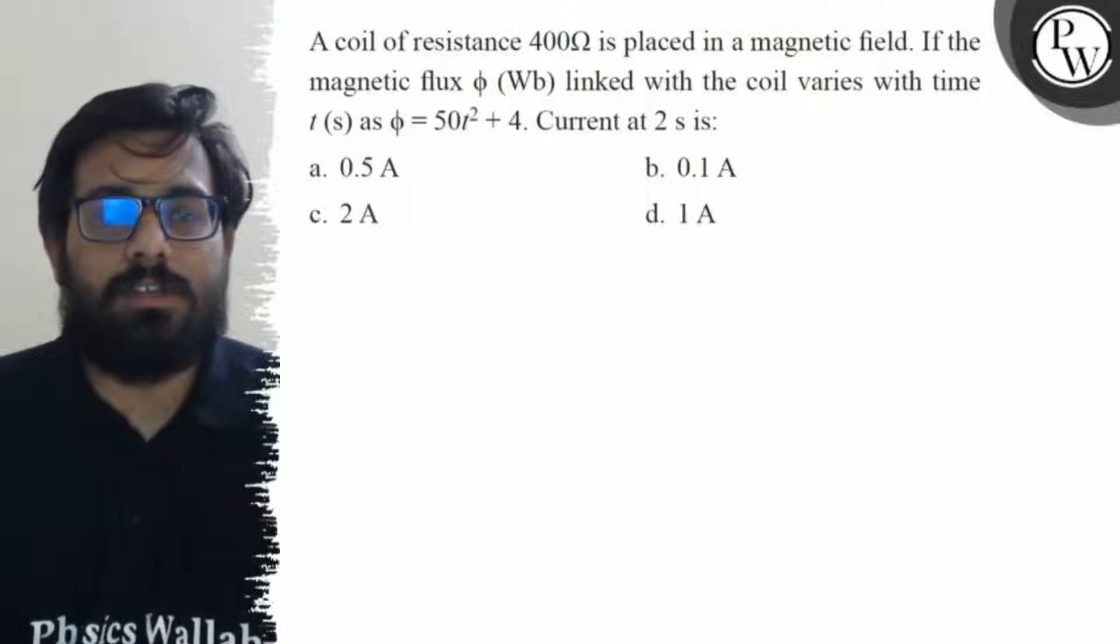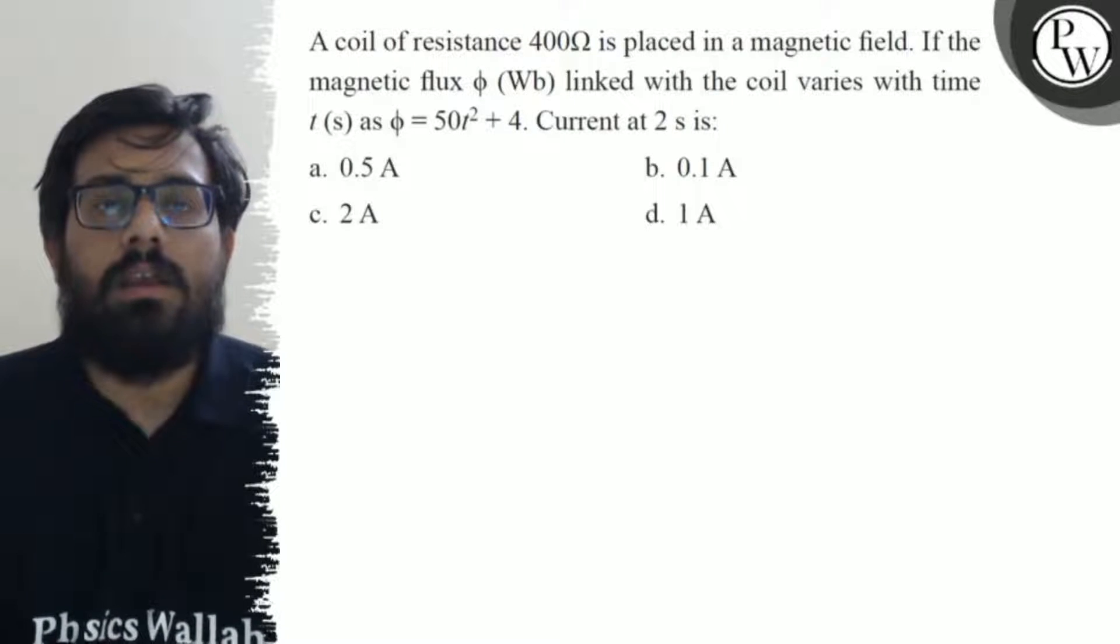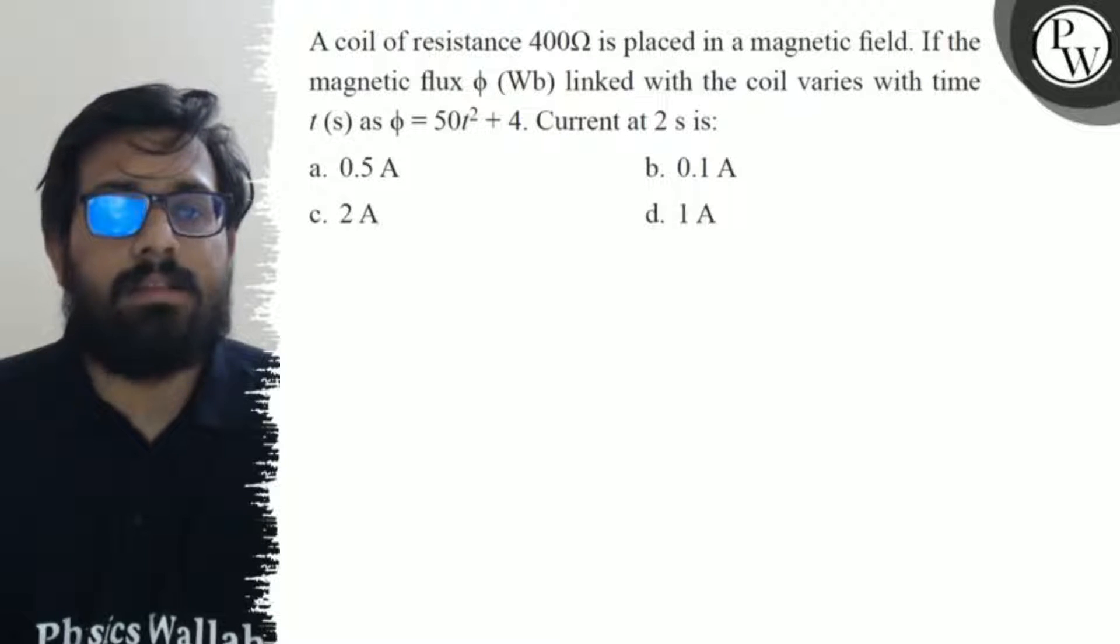Hello bachos, let's see the question. A coil of resistance 400 ohm is placed in a magnetic field. If the magnetic flux φ linked with the coil varies with time as φ = 50t² + 4, the current at 2 seconds is: